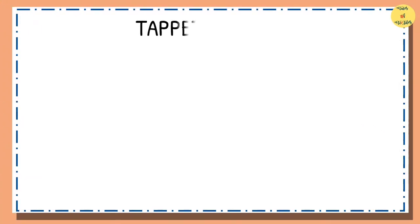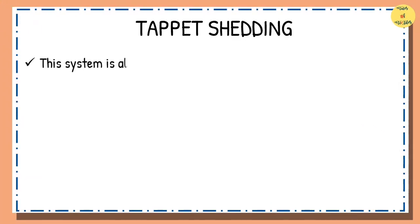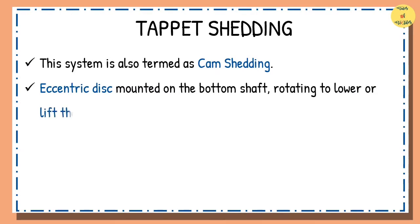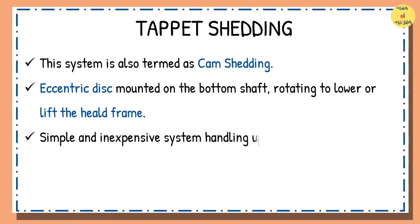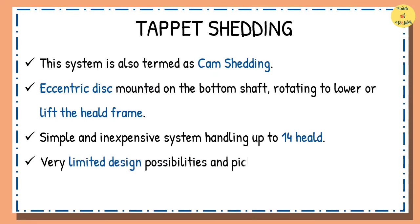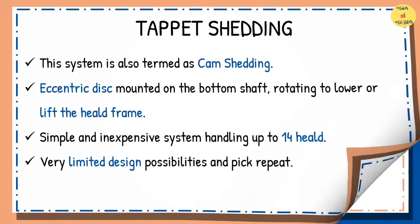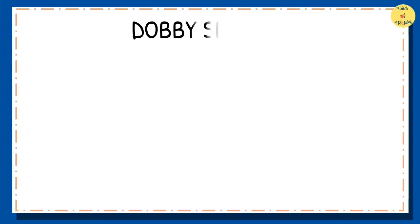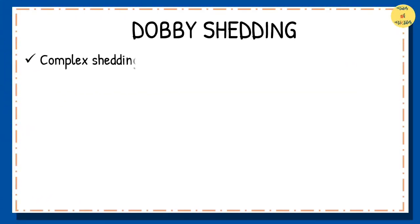The tappet system is also termed as cam shedding. The cam is an eccentric disc mounted on the bottom shaft, rotating to lower or lift the heald frame. It is a relatively simple and inexpensive system handling up to 14 heald frames, but has very limited design possibilities and pick repeat, producing simple weaves.